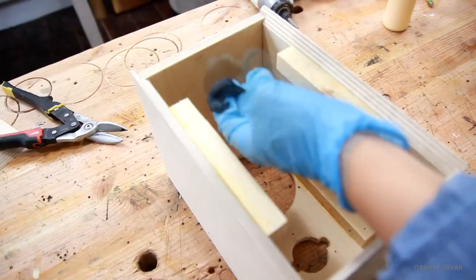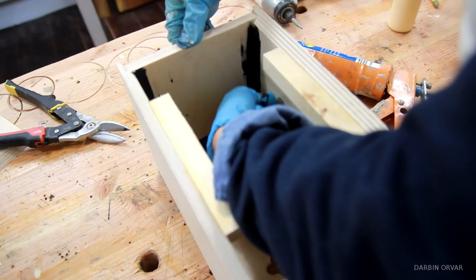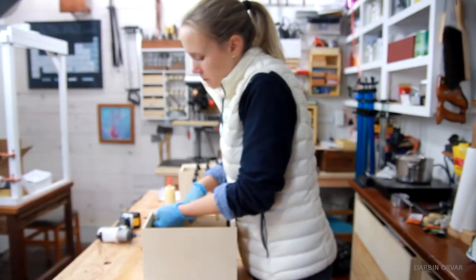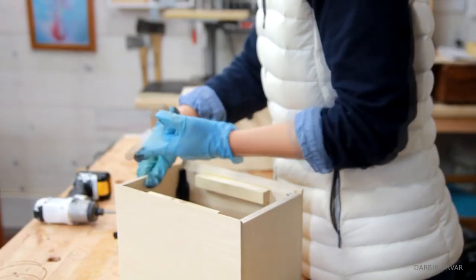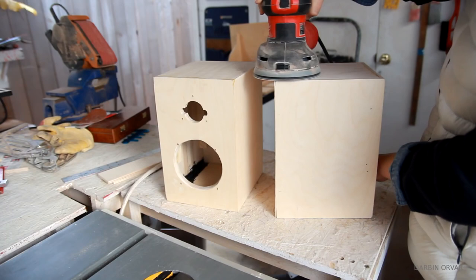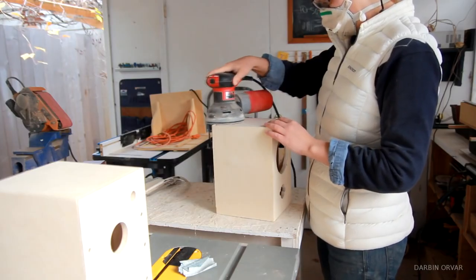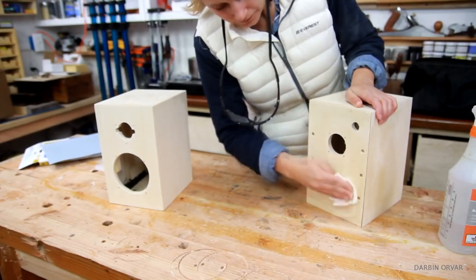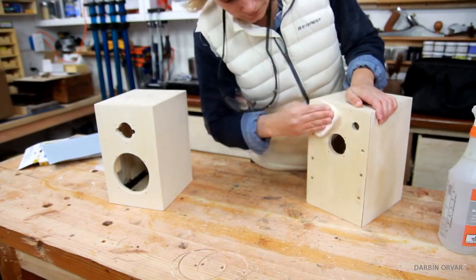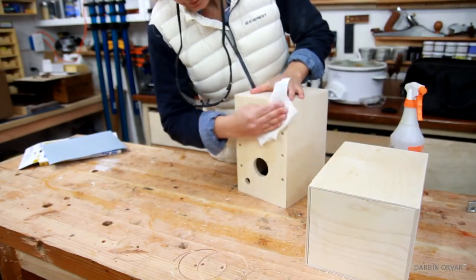Now I want to make a sealed speaker box, so I decided to put some black caulk in the corners on the inside to make sure the sound doesn't escape. And then I'm sanding the boxes smooth. So in terms of finish, I wanted these to look really classic and sleek, so I decided to go with an ebony dye.